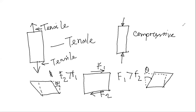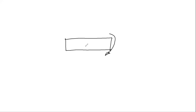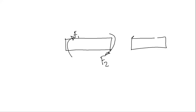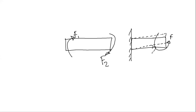The next loading type is torsion. In torsion, you need to make a twisting effect — you put a force here and here, F1 and F2. Or you can have a fixed point and then twist the object. Both will create torsion. In this case, an angle of twist theta is created.